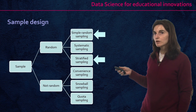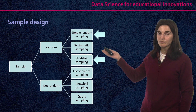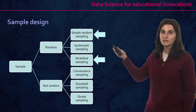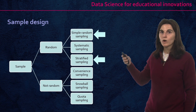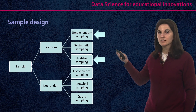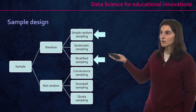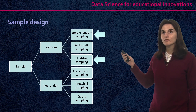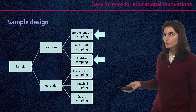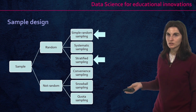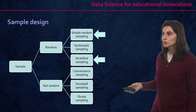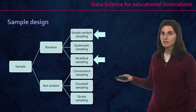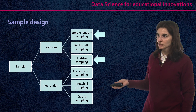We could also select randomly from a list of students — for example, one out of every ten students — which would be systematic sampling. Or if we cannot access randomly the full population of students, then we can use non-random sampling in some motivated and justified situations.